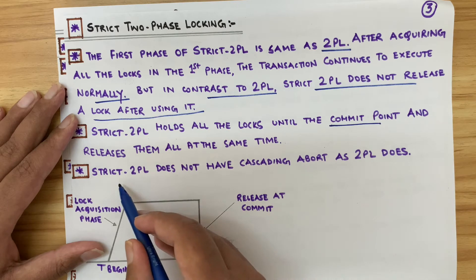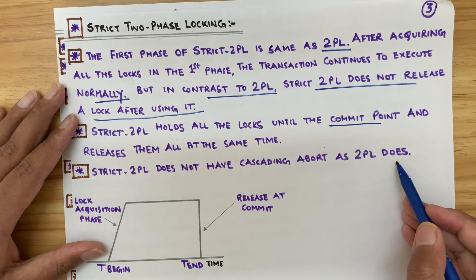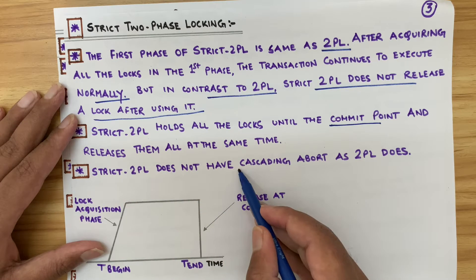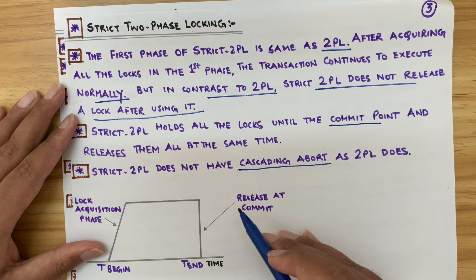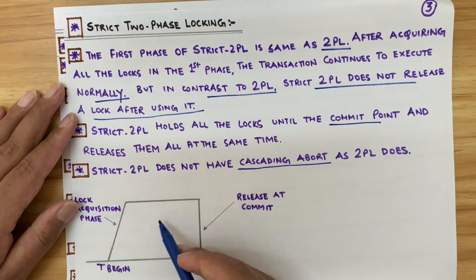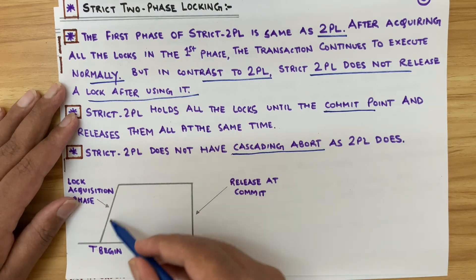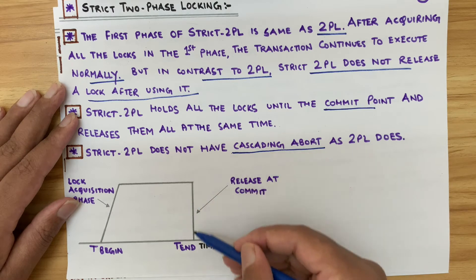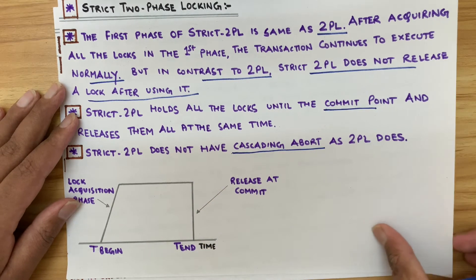Strict two-phase locking does not have cascading abort as two-phase locking does. Cascading abort is aborting one after another. In strict two-phase locking, you can see it acquires locks one after the other and then releases them all at the same time after the commit.